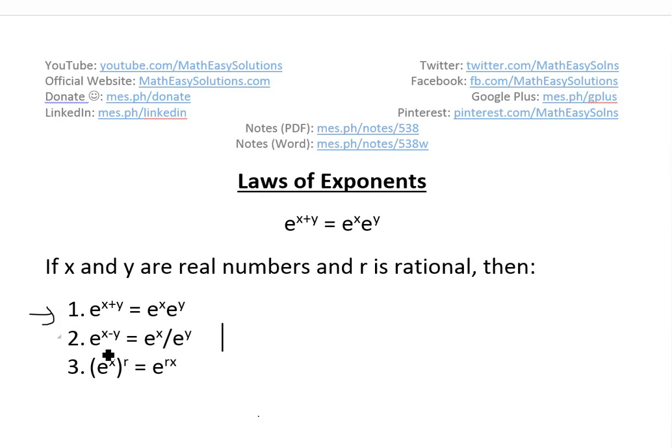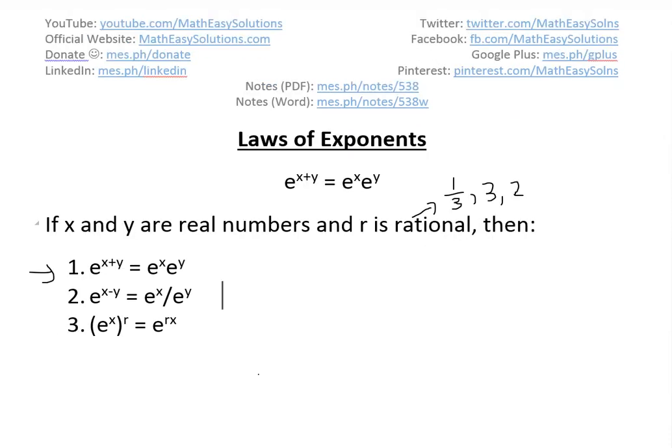In later videos I'll go over these two. Basically, if x and y are real numbers and r is rational, this just means anything that can be written as integers—1 divided by 3, or 3, or 2—anything that can be written as integers at the top and bottom, except the bottom can't be equal to 0. You can't divide by 0.